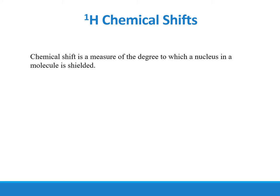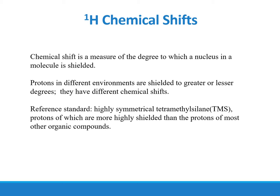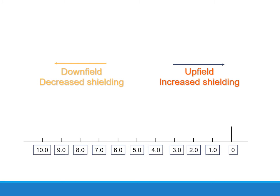Chemical shift is a measure of the degree to which a nucleus in a molecule is shielded. Protons in different environments are shielded to greater or lesser degrees, giving them different chemical shifts. The reference standard is highly symmetrical tetramethylsilane (TMS), whose protons are more highly shielded than the protons of most other organic compounds. In the chart, upfield means increasing shielding and is closer to zero PPM, whereas downfield means decreased shielding and corresponds to higher PPM values. Trimethylsilane is used as a standard reference because its PPM value is equal to zero.